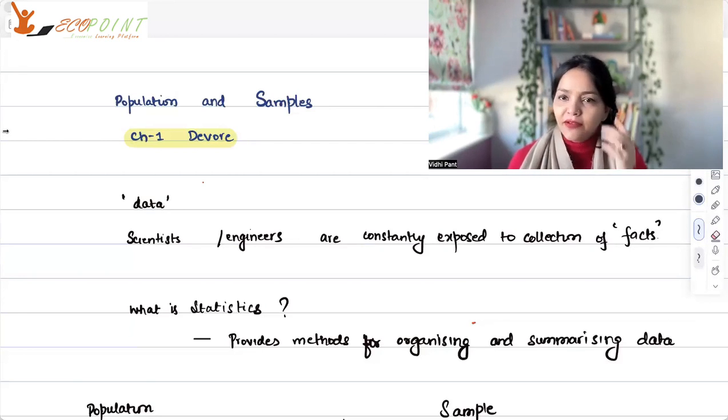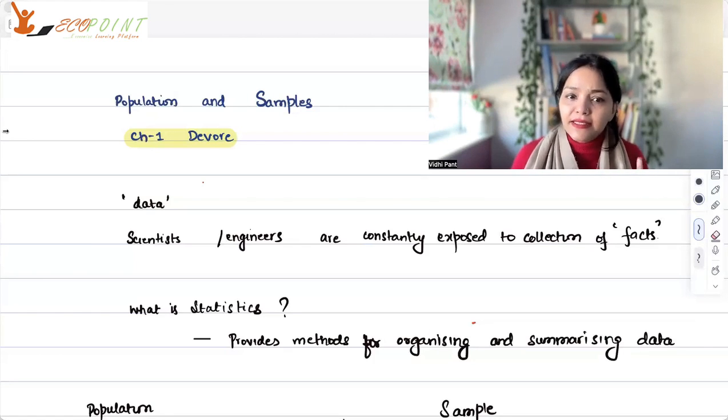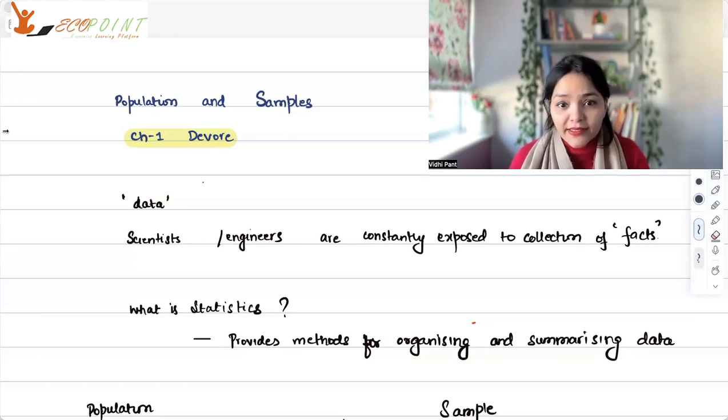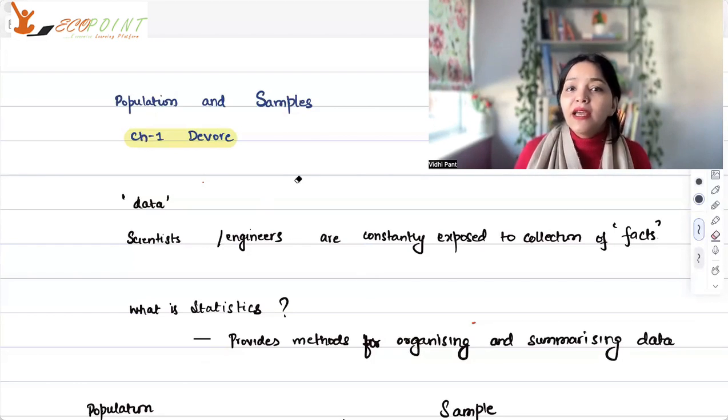Everything in statistics revolves around something called data. Whether it's a scientist, researcher, engineer, or anyone in any domain who's researching on something, that person would constantly collect some facts. Data is nothing else but the facts that this researcher will collect. Now, what is statistics? And how are they related to each other?